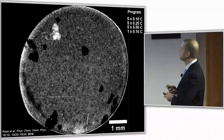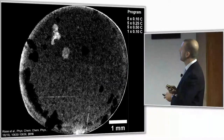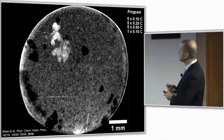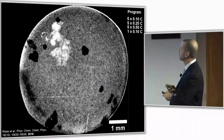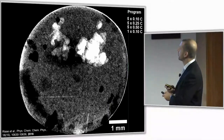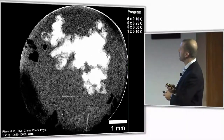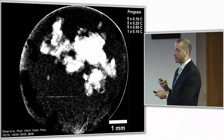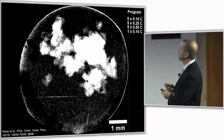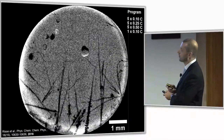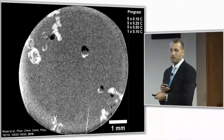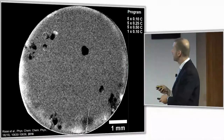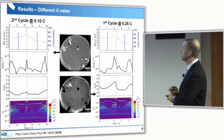Now we go to a higher C-rate, and as you can see, this ring and the dendrite formation is different. Now we go to even higher, and you can see this effect — we have also seen this in the morning keynote talk — that you have also an evolution of gas or dry areas in the cathode material. But when you go back to 1C, you have somehow a recovery of these dry areas. Now it starts again, so we just zoom in.